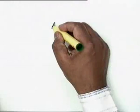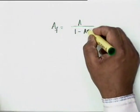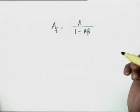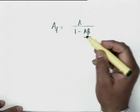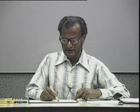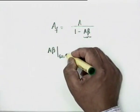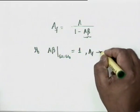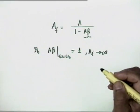In the general feedback configuration, the feedback gain is A_F = A / (1 − Aβ). For negative feedback the sign changes to plus Aβ. Now we are talking about positive feedback, so we want Aβ to be positive. If A and β are frequency dependent and at some frequency ω = ω₀, Aβ equals 1, then A_F tends to infinity. The amplifier requires no input to produce an output, which means it oscillates at frequency ω₀.